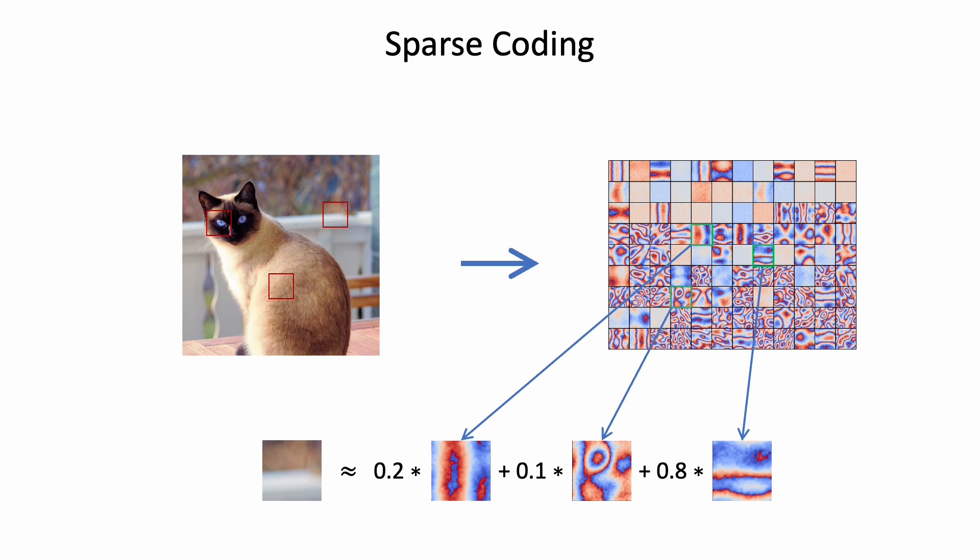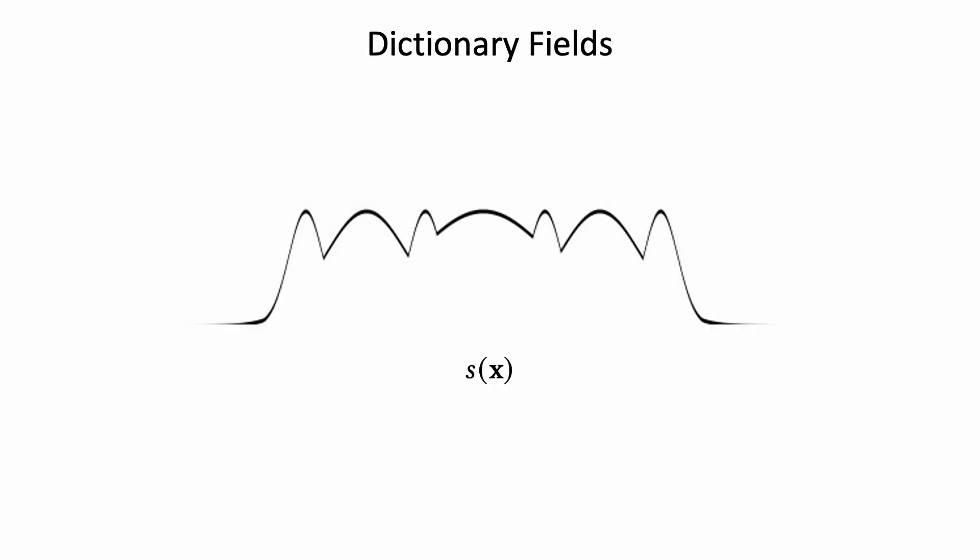In the following, we develop our dictionary fields model step by step, starting from a standard basis expansion. Let us first consider a 1D signal, S(x).